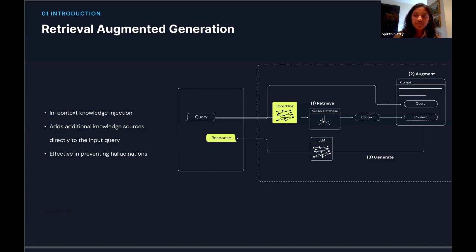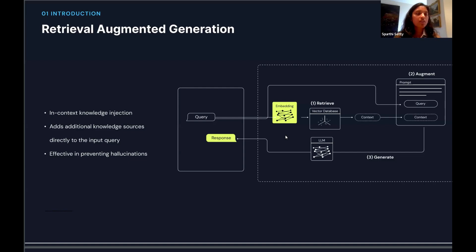The way RAG works is that we store domain-specific knowledge in a knowledge hub. For earnings calls, we take all those documents, convert them into embeddings, store them in a vector database, and convert the query into embeddings. Using similarity search, we compare which section from the documents is most relevant to answer the question. That relevant chunk is then appended to the prompt before the LLM sees it — something like 'Answer this question using this context' — and because you're giving the information right there, it's very effective at preventing hallucinations.